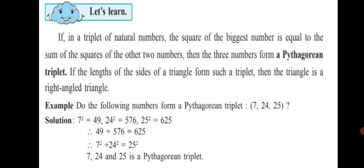The square of the biggest number 25 is equal to the sum of the squares of the other two numbers. So we can see that 7, 24, and 25 is a Pythagorean triplet.